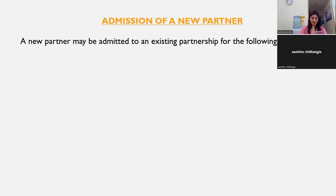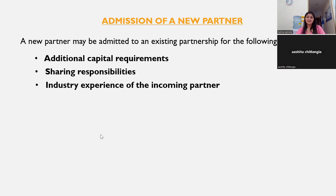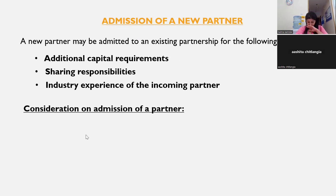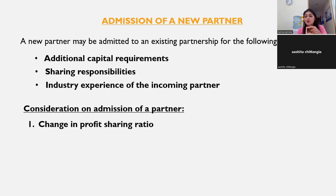Why do you admit a new partner? Reasons include: to get more capital, to get more ideas into the business, and if one partner has retired or passed away, to fill that partner's absence. Whenever you have a sum on admission, four things you definitely have to do. First, you need to know the new profit sharing ratio — this helps you write off the goodwill on the debit side.